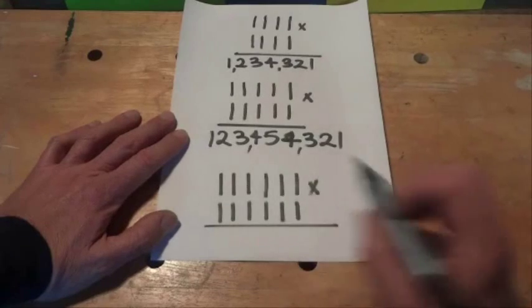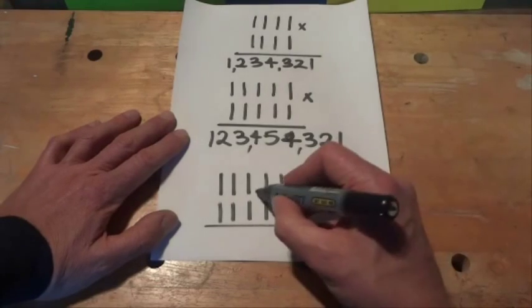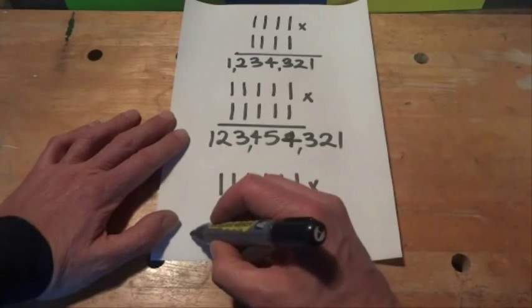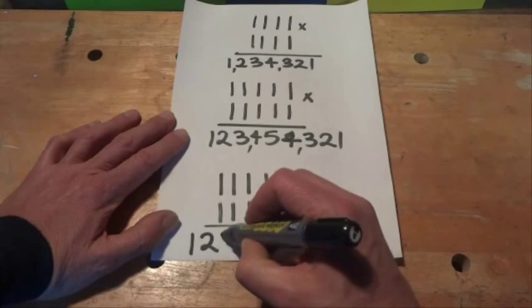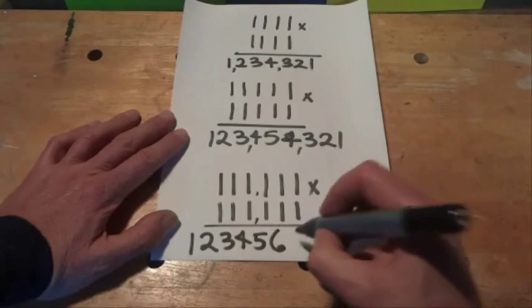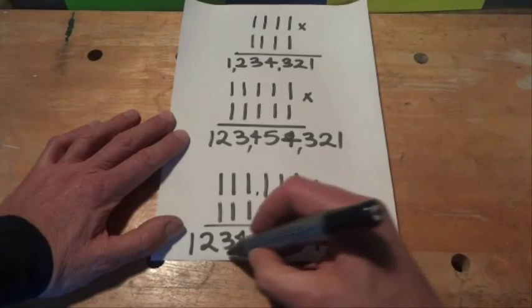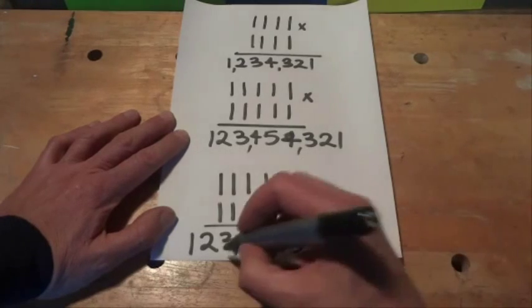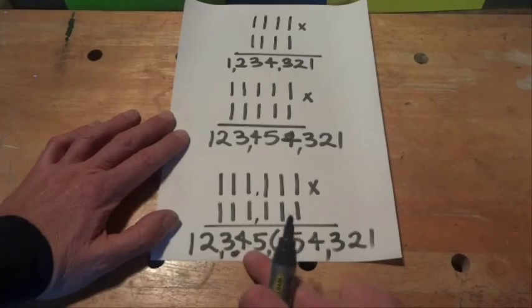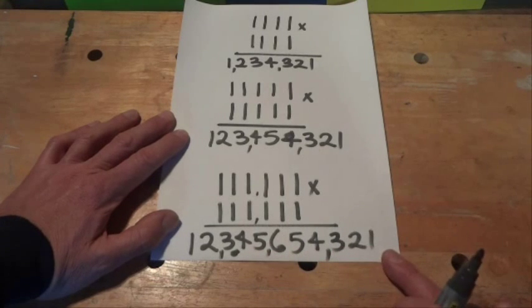And then the last multiplication is 111,111 multiplied by 111,111. And in this case, the answer is 1, 2, 3, 4, 5, 6, 5, 4, 3, 2, 1, which is 12,345,654,321.